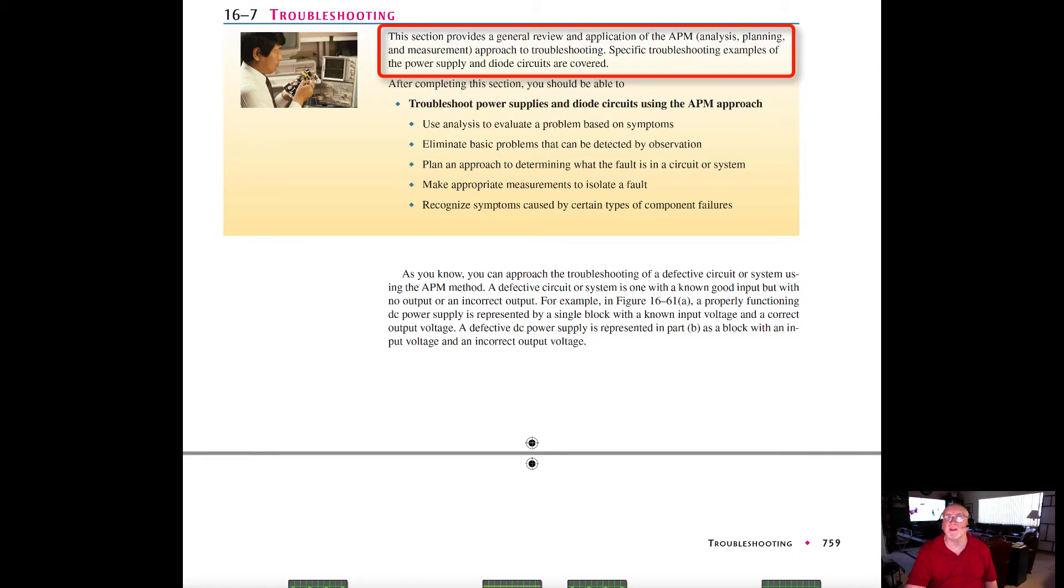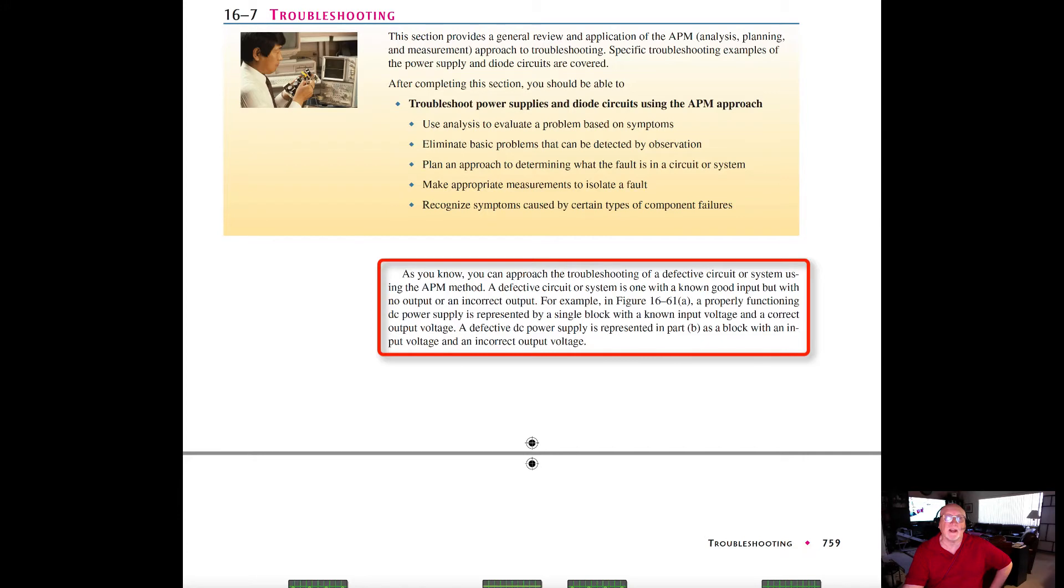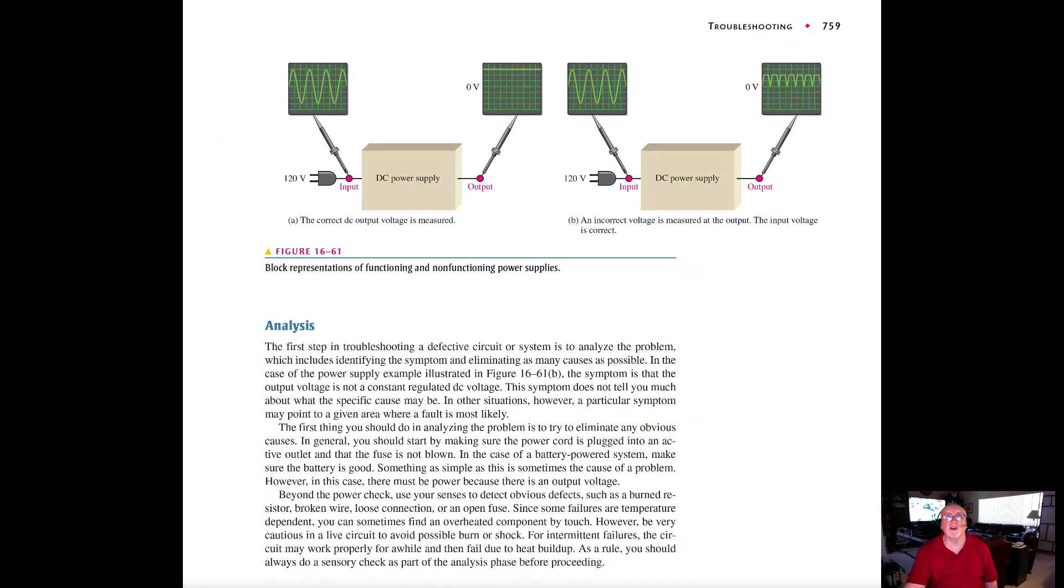As you know, you can approach troubleshooting of a defective circuit or system using this analysis, planning, and measurement method. A defective circuit or system is one with a known good input but with no output or an incorrect output. For example, in the diagram, a properly functioning DC power supply is represented by a single block with a known input voltage and a correct output voltage. The defective DC power supply is reflected in Part B with an input voltage and an incorrect output voltage. So the correct DC input voltage is measured and you get a value. The incorrect voltage input and output is shown.